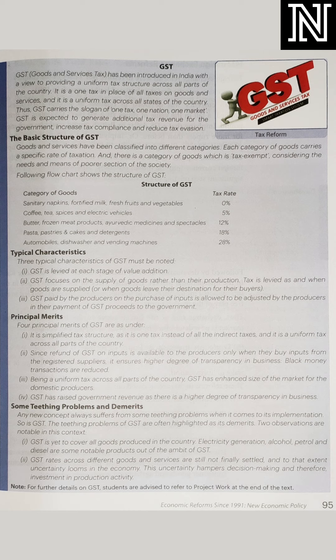अब उसने 300 की चीज आगे जाकर 600 में बेची — तो वो किस पे tax देगा? 600 रुपए में कितना addition हो रहा है? 300 पे tax देगा. तो पहला फायदा ये है कि इस पे total value पे tax नहीं लगता, value addition पे लगता है, जिससे दुकानदारों पे burden कम हो जाता है. इसलिए अब लोग तैयार रहते हैं GST देने के लिए. Second — goods produce होने से जब तक customer तक नहीं पहुंच रहा है, हर level पे tax लगेगा, क्योंकि ये value addition कहला रहा है. बीच में बहुत सारे channels होते हैं जो माल खरीदते हैं — जैसे wholesaler, retailer — customer तक पहुंचने में लंबी process होती है. जब तक customer के पास नहीं पहुंचा, हर channel पे value addition पे tax लगेगा.